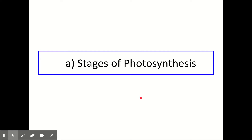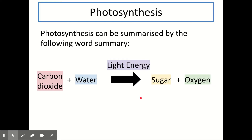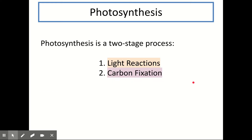The first thing we're going to look at is the stages of photosynthesis. Photosynthesis can be summarised by using a word summary like this. The raw materials are carbon dioxide and water, light energy is found above the arrow, and sugar and oxygen are the products. Photosynthesis can be split up into two stages: the light reactions and carbon fixation, and we're going to talk about both of these individually.